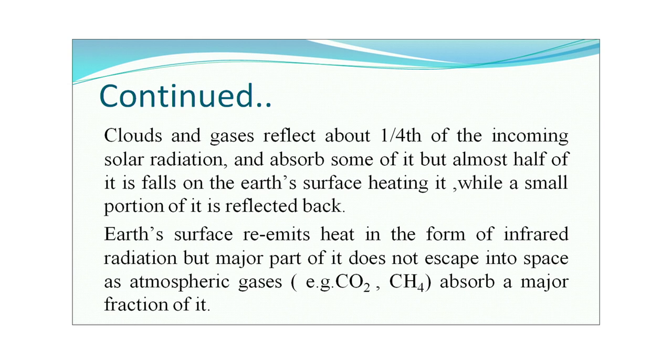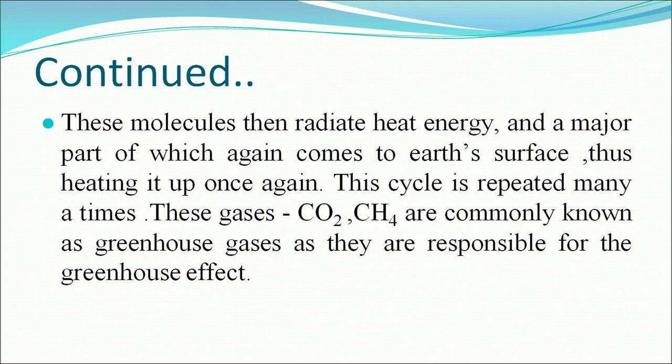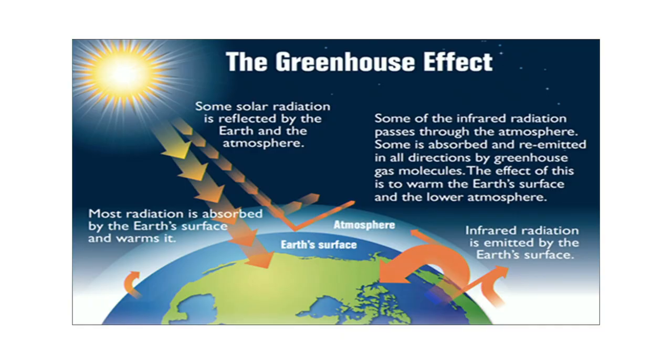Earth's surface re-emits heat in the form of infrared radiation, but the major part of it does not escape into space, as atmospheric gases such as carbon dioxide and methane absorb a major fraction of it. These greenhouse gas molecules then radiate heat energy, and a major part of it comes back to Earth's surface, heating it up again. This cycle is repeated many times. These gases are commonly known as greenhouse gases.